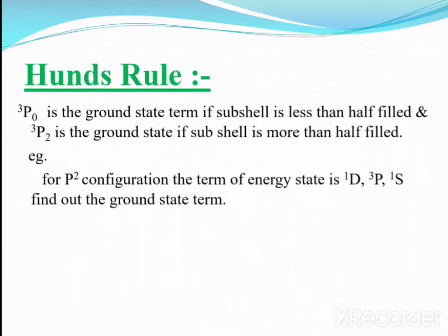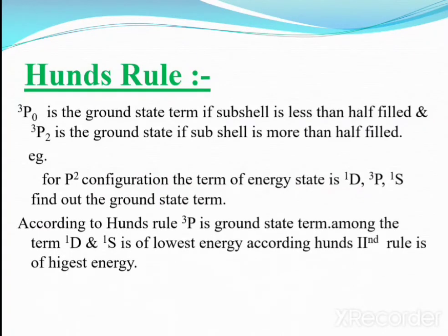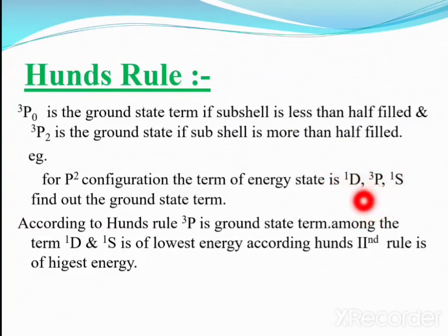For example, for the p² configuration, the energy state terms are ¹D, ³P, and ¹S. We need to find the ground state term. According to Hund's Rule, ³P is the ground state term because it has the highest spin multiplicity — higher spin multiplicity corresponds to the lowest energy.